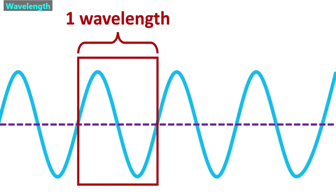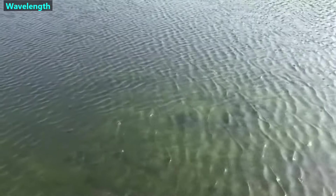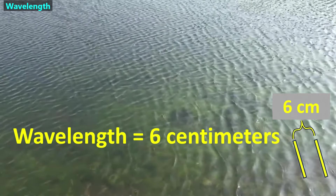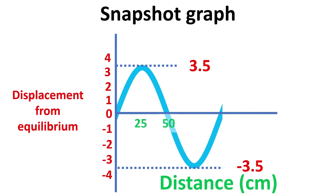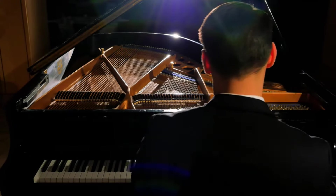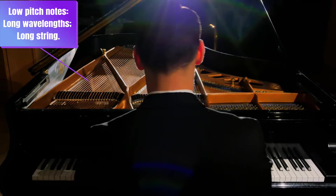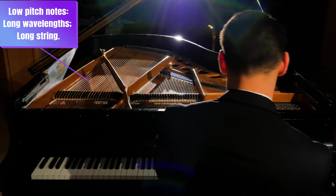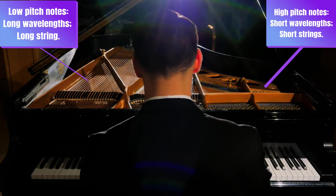Next, we'll discuss wavelength. As we noted in the overview video, wavelength is the length of one wave. It's easiest to measure this as the distance between two adjacent wave crests. The wavelength for these water waves is six centimeters. We use the Greek letter lambda to symbolize a wave's wavelength. A snapshot graph is useful when we want to know a wave's wavelength; in this case the wavelength is 100 centimeters. Each key on a piano makes a sound with a specific wavelength. Low pitch notes have long wavelengths and are made by long strings. High pitch notes have short wavelengths and are made by short strings.